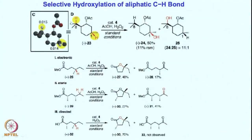In the last class we saw these compounds where selectively this position is not the major product, but this is the major one — the highlighted positions are where the C-H bond is getting hydroxylated. In cases where it is a secondary or primary bond we get the ketone; in cases where it is tertiary we get the hydroxylated product.